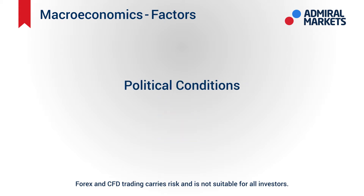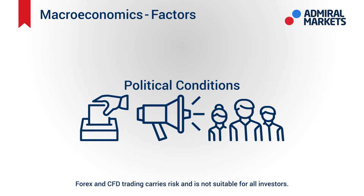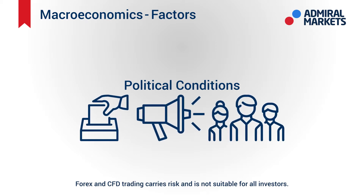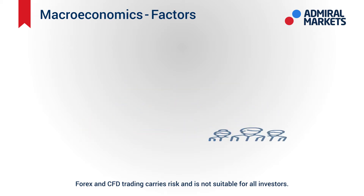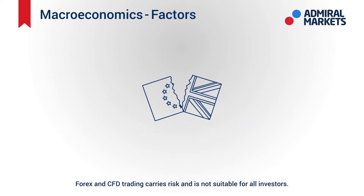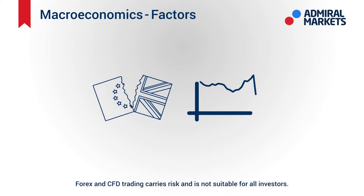Thirdly, political conditions. Elections, protests, referenda and other political actions are all good examples of disruptive events that can drastically affect price levels. For example, when the Brexit referendum didn't go as predicted, the value of the Great British Pound plummeted.